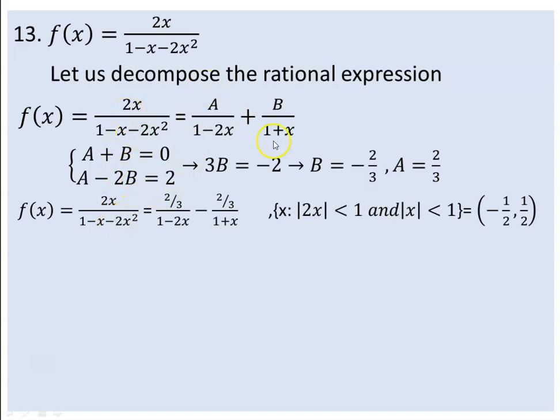So f(x) equals 2/3 over 1 minus 2x minus 2/3 over 1 plus x. The series x to the power of n is convergent when the absolute value of x is less than 1. Here, the absolute value of 2x must be less than 1, and the absolute value of x must be less than 1. The intersection is when absolute value of x is less than 1/2, so the interval of convergence is negative 1/2 to 1/2.